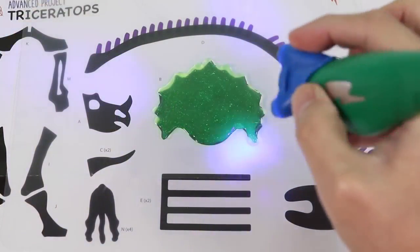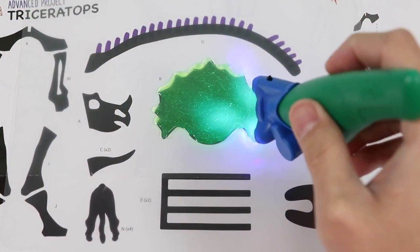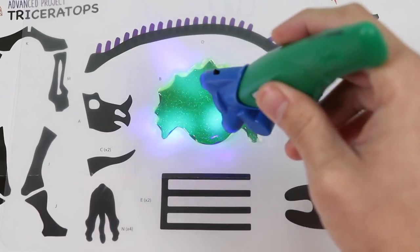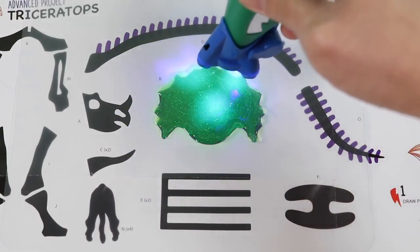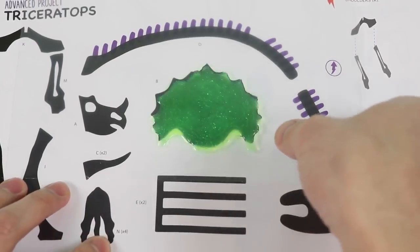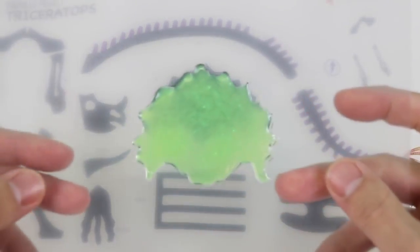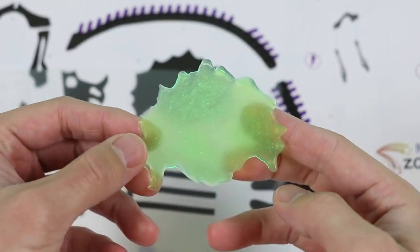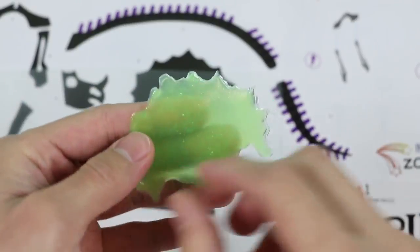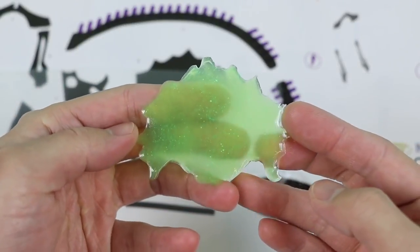Alright, finished filling out the neck frill portion, so let's light it up one more time to completely harden it. Nice! Now that this is complete, we can take it off the sheet now. Here's how it looks! And let's put this aside and make another body part.